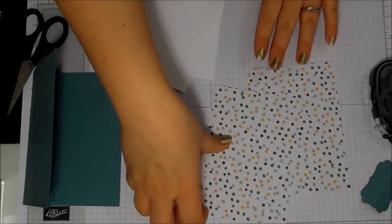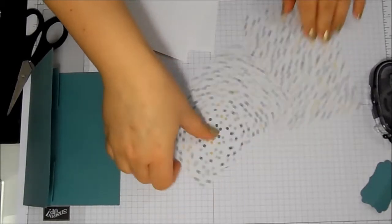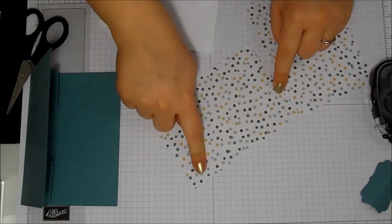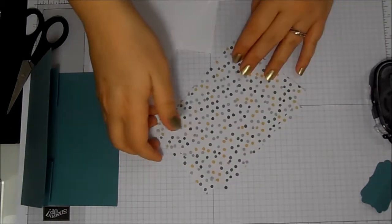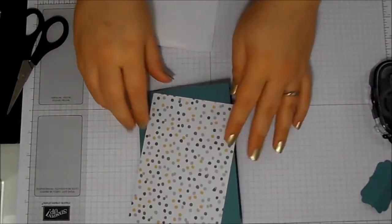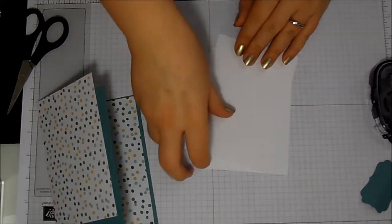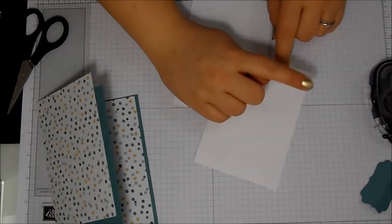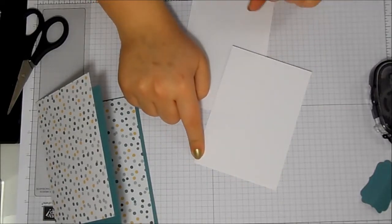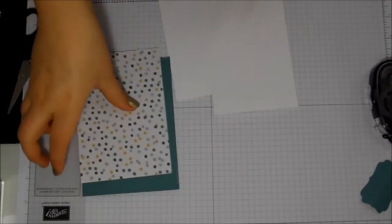So my pieces of DSP are cut at five and five eighths of an inch by four, which is 14.3 by 10 centimeters, and I've got two of those, one for the front and one for the inside. And then I've also got two pieces of Whisper White cardstock, which are cut at five and three eighths of an inch by three and three quarters, which is 13.8 by nine and a half centimeters. Don't worry about writing any of these things down because they will be on my blog, hopefully.